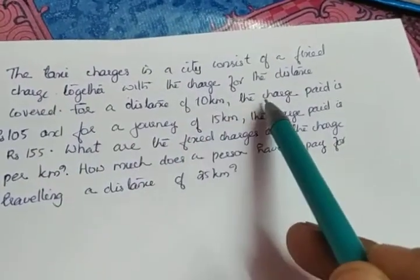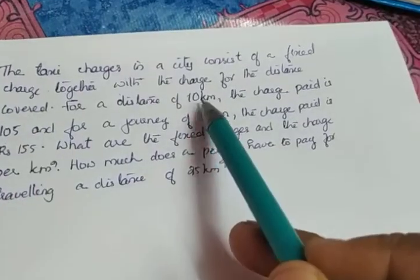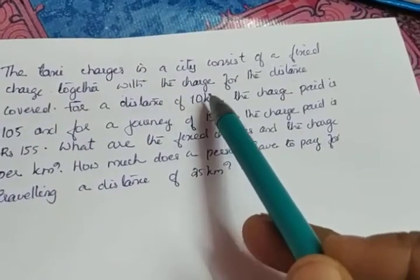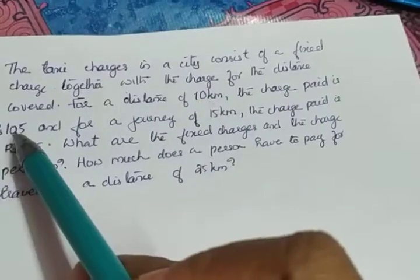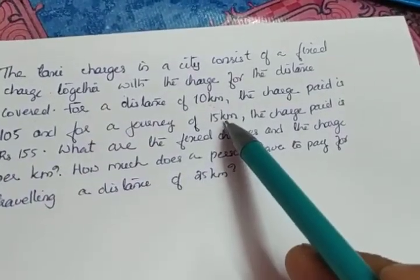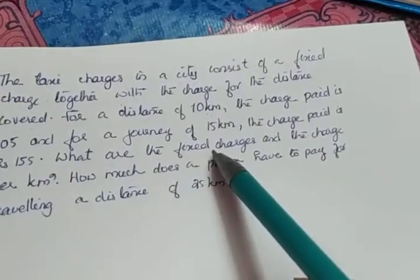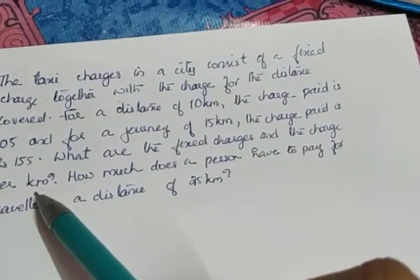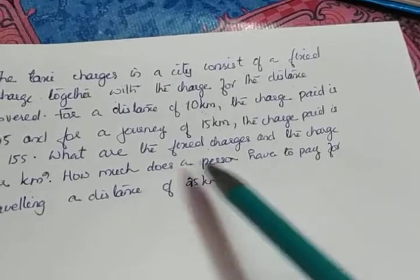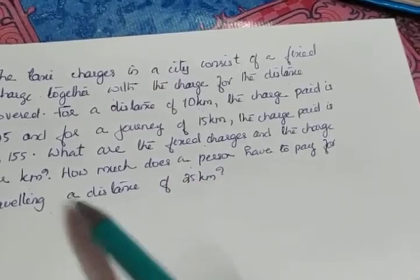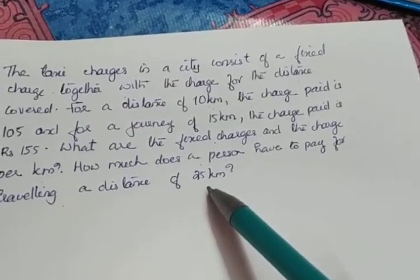For a distance of 10 km, the charge paid is 105. If a person is travelling a distance of 10 km, the charge is 105 rupees, and same way for 15 km, it is 155 rupees. We have to find the fixed charges and charge per km, and also how much does a person have to pay for travelling a distance of 25 km.